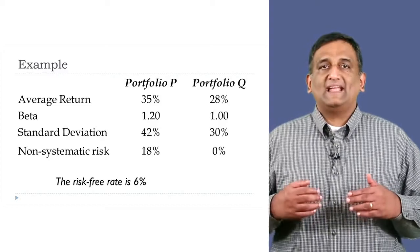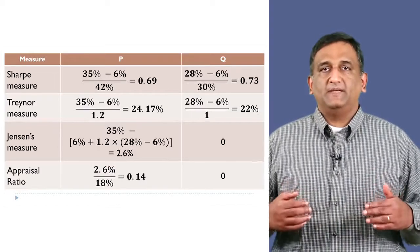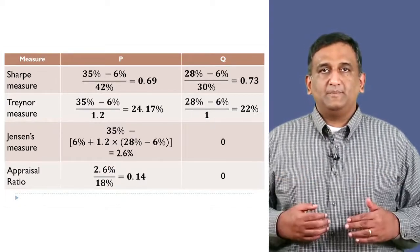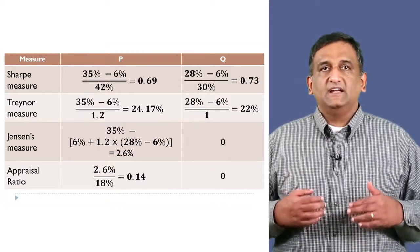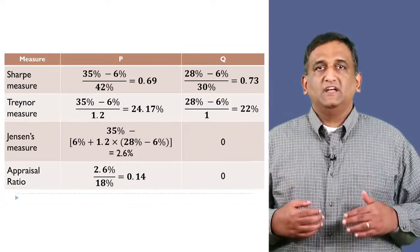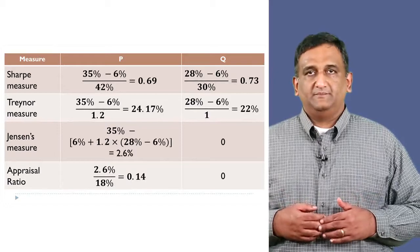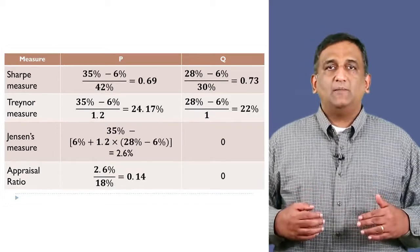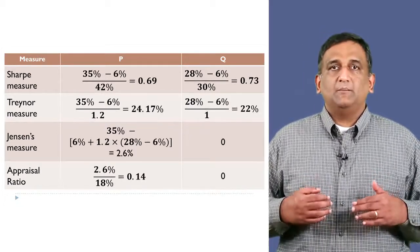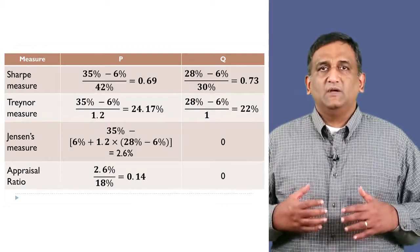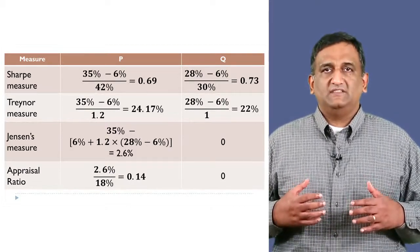Let's start off by calculating the Sharpe measure of P. It is 35% minus 6% divided by 42%, which is 0.69. Q has a Sharpe measure of 28% minus 6% divided by 30%, which comes out to 0.73.